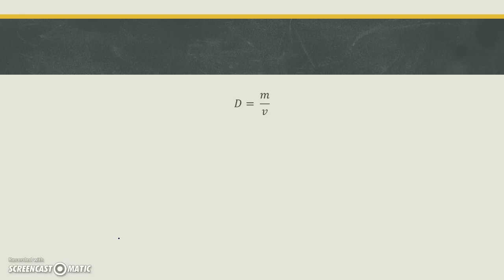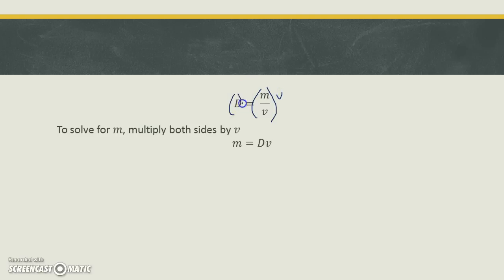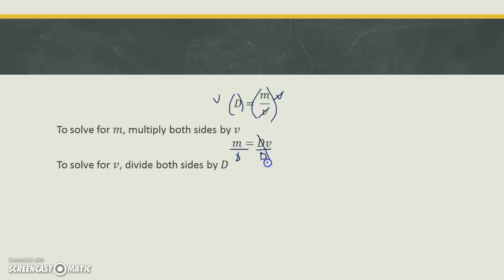Let's try another one. What if we were to solve for d, and we had m over v? So if we're solving for m, we can multiply both sides by v. We multiply both sides by v, and we end up with m is equal to d times v — this cancels, and we end up with v times d. What if I wanted to solve for v? If I want to get rid of the d, I would need to divide both sides by d. When I divide both sides by d, that cancels, and we're left with v is equal to m over d.